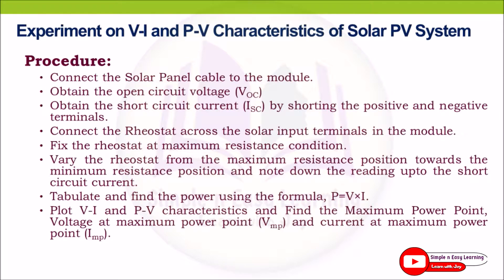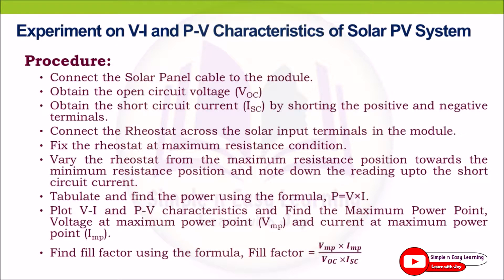Plot the VI and PV characteristics and find the maximum power point, the voltage at maximum power point (VMP), and the current at maximum power point (IMP). Find the fill factor using the formula: fill factor = (VMP × IMP) / (open circuit voltage × short circuit current).